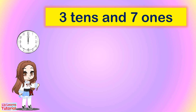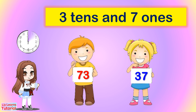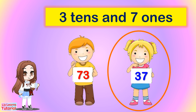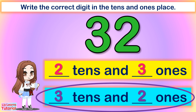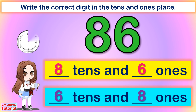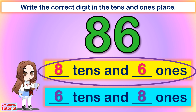Three tens and seven ones. Two tens and seven ones — thirty-seven. Write the correct digit in the tens and ones place: three tens and two ones is 32; eight tens and six ones is 86.